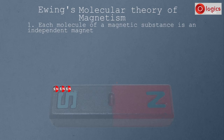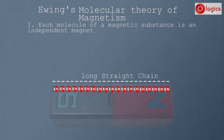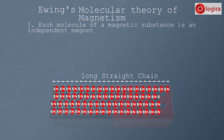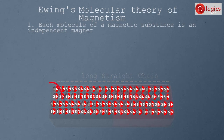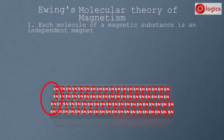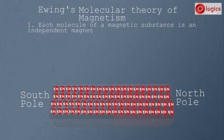In this way, molecules arrange themselves one after another forming long straight chains. At one end of the magnet, all south poles of molecules point in that direction, making it the south pole. At the other end, all north poles of molecules point outward, making it the north pole. This is how poles are formed.